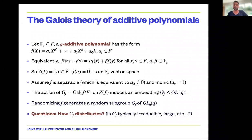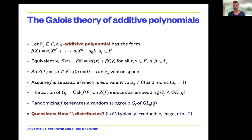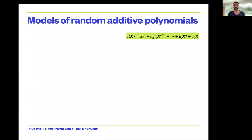So the Galois group is not a subgroup of Sn — not every symmetry is allowed because we have a structure on the zero set. If you randomize f in some way you get a random subgroup of GLn(q). The main question is how this Galois group distributes: for example, is the Galois group typically an irreducible subgroup of GLn? Is it large? I should also mention that q-additive polynomials are a very classical object, arising in the study of Drinfeld modules.